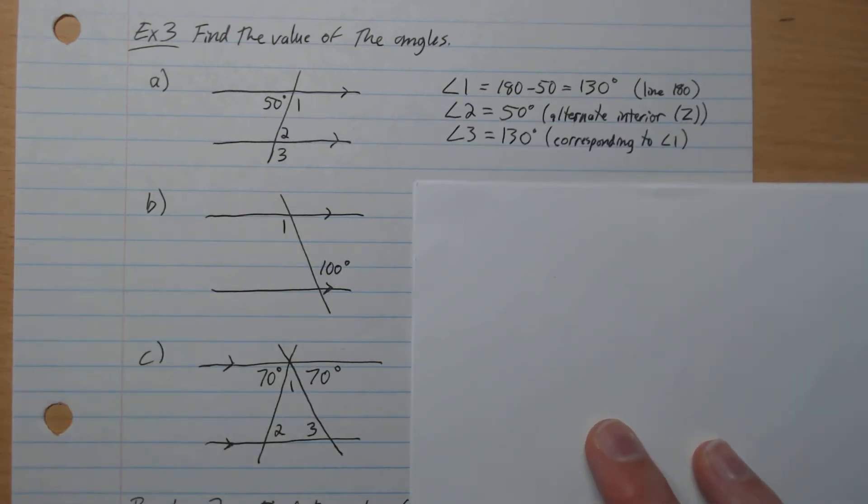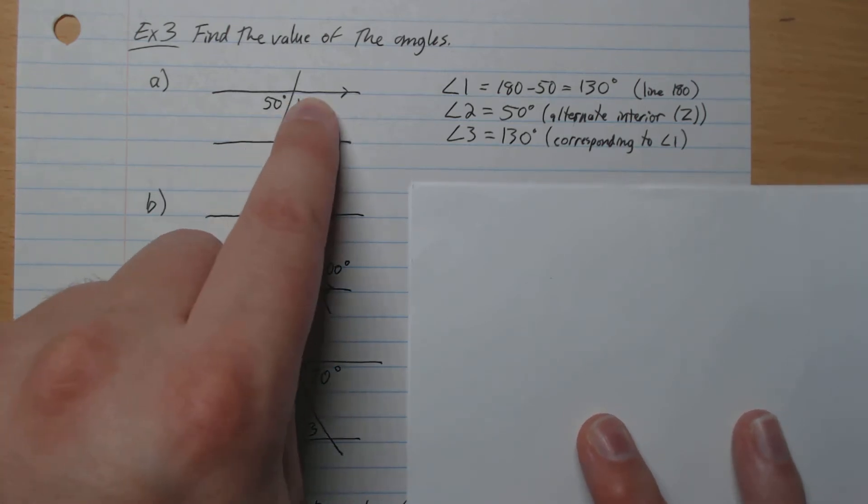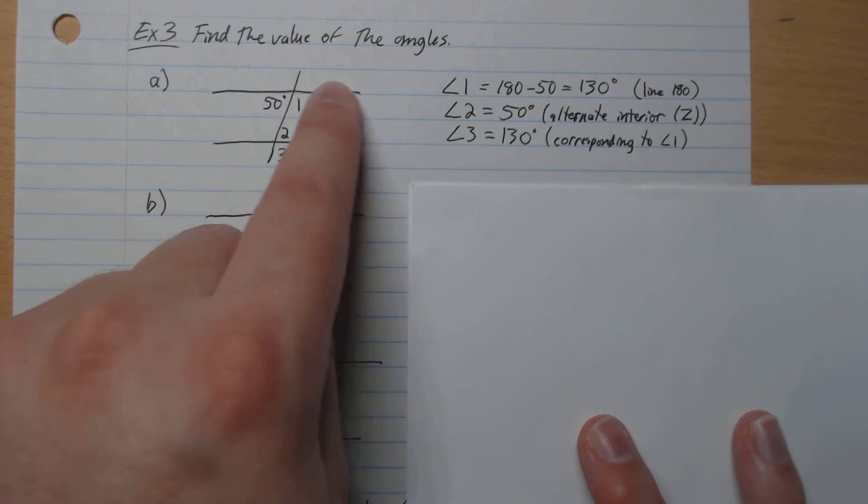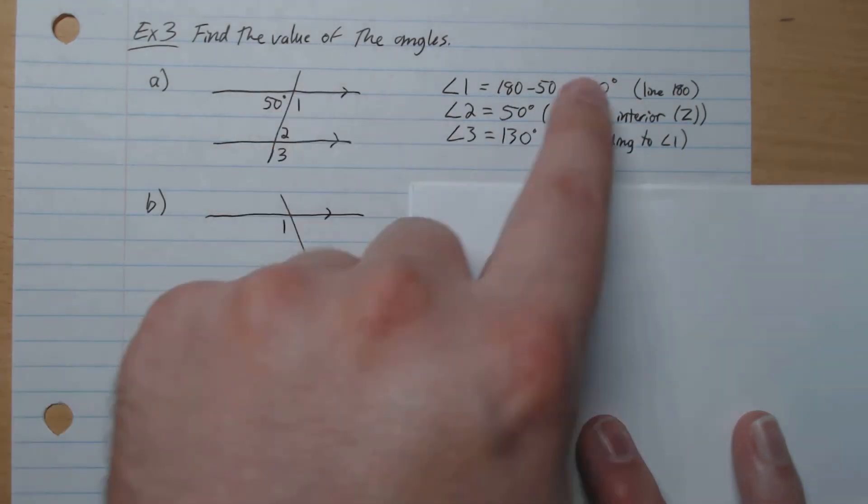By the way, there's many ways of approaching it. If you do it somewhat differently than mine but you still get the same answer, don't worry about it. There's many ways of getting angles. So angle 1, we see you can have 180 minus 50, which gives 130. So 130 is the value of angle 1.